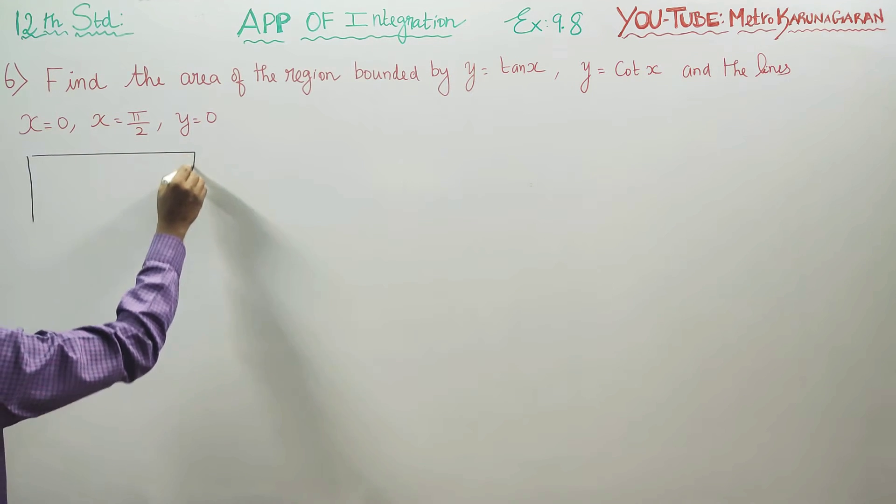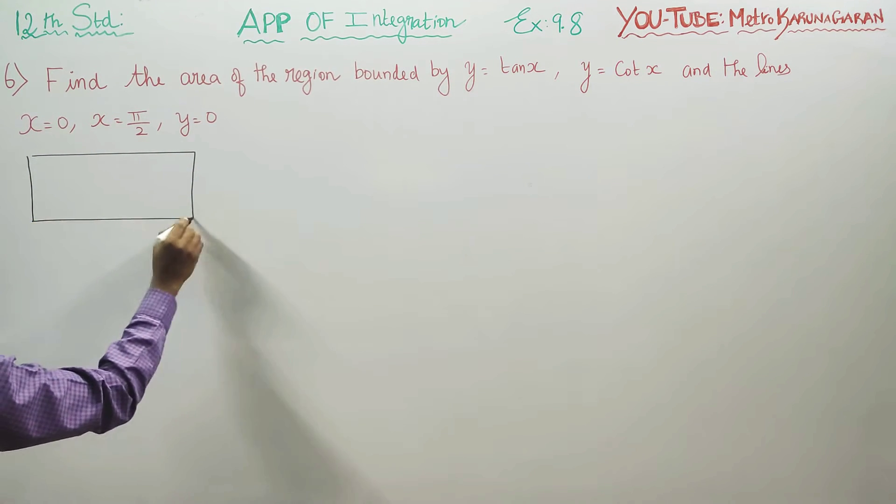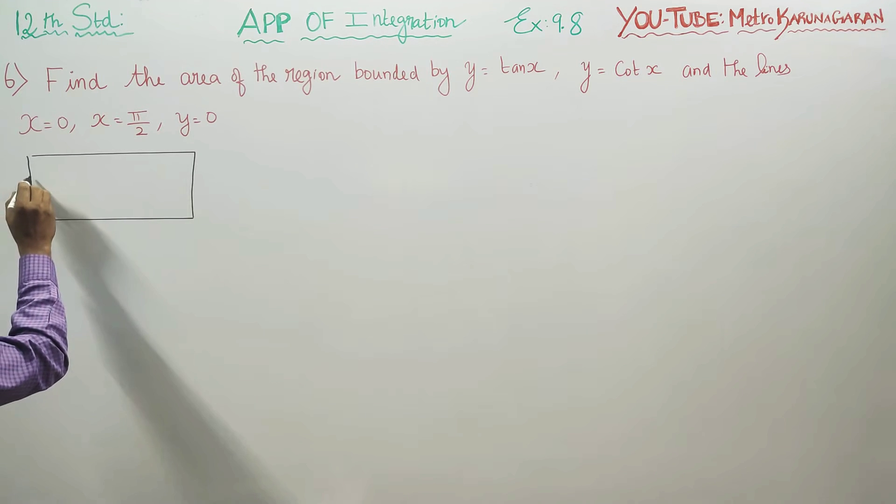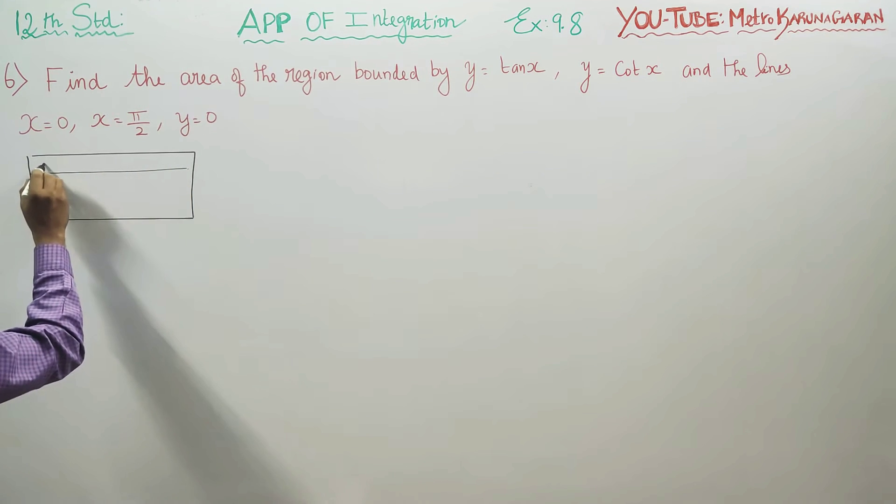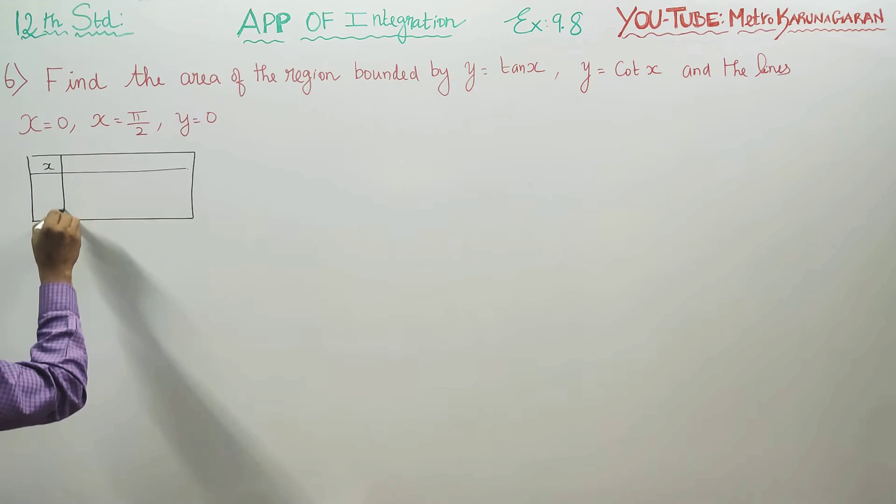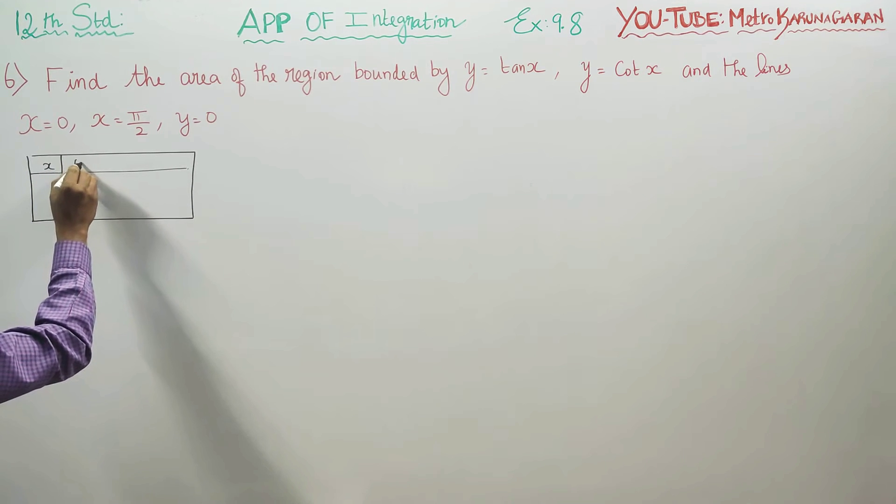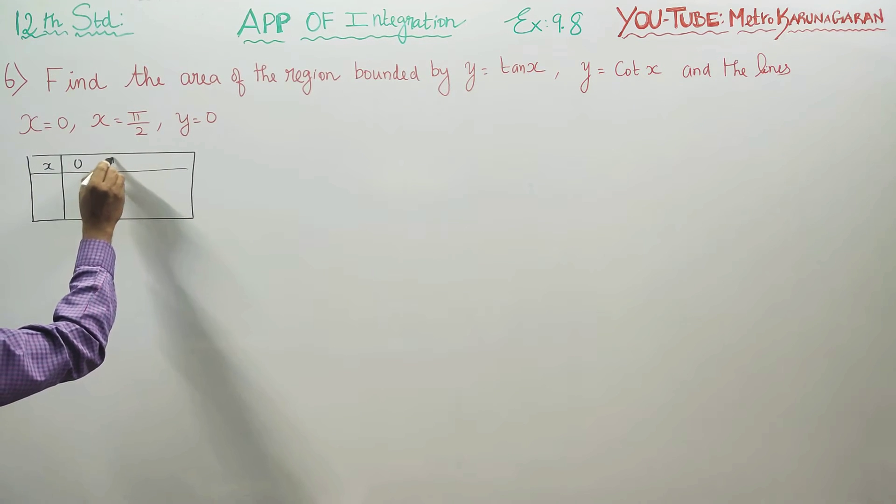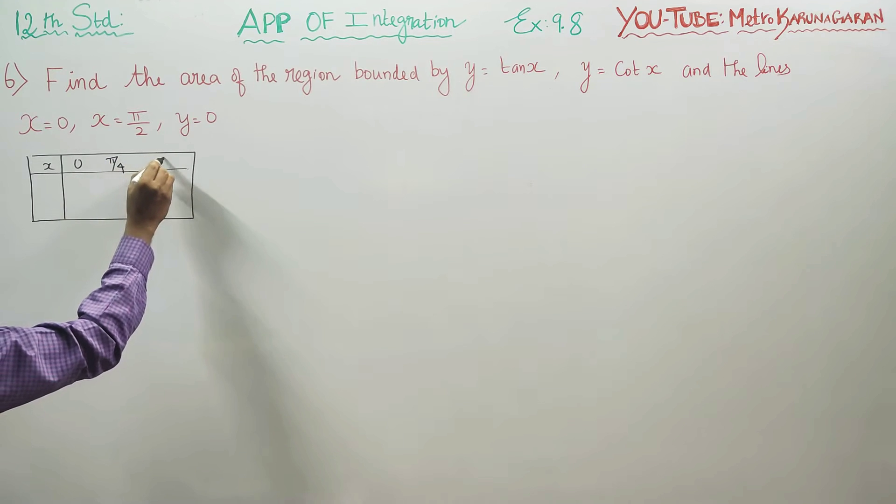First of all, a small intro about our tan and cot. My values are x, I am taking just 3 values: 0, 45 degree and 90 degree.